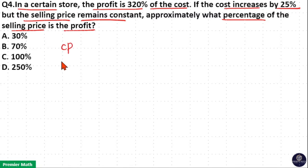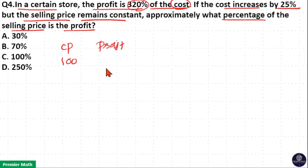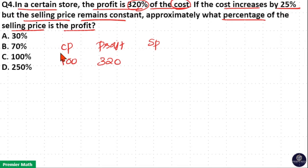Consider the cost price as 100 rupees. Then profit is equal to 320% of the cost. 320% of 100 is equal to 320. Now, selling price is equal to cost price plus profit, which is equal to 420 rupees.